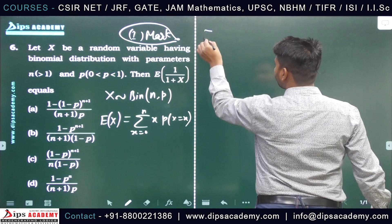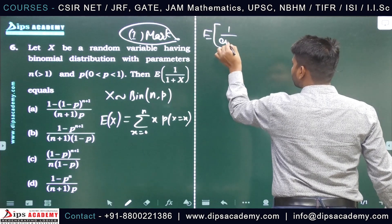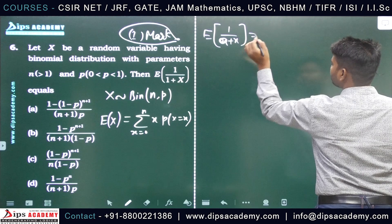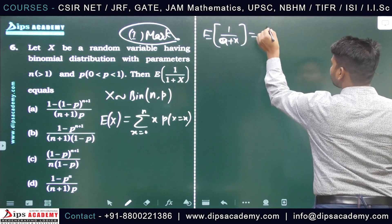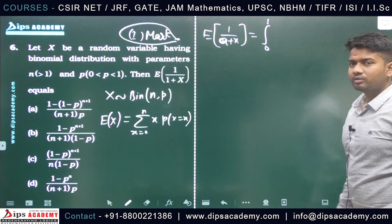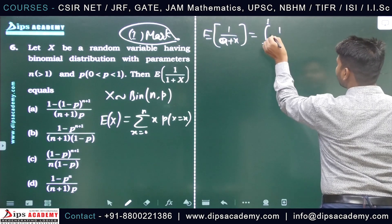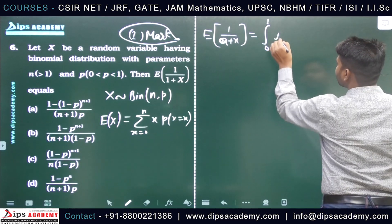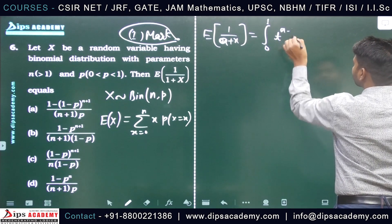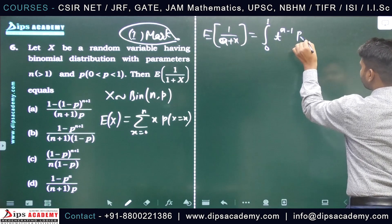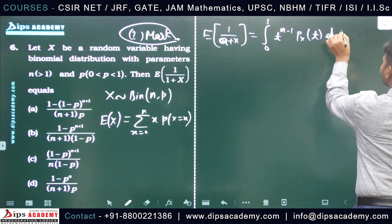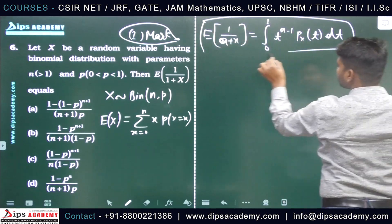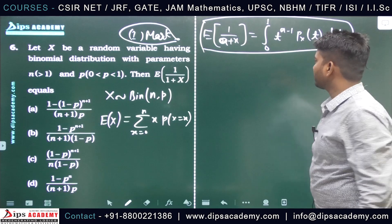The general formula we will use is: expectation of 1/(a+X) equals the integral from 0 to 1 of t^(a-1) times P_X(t) dt, where P_X(t) is the probability generating function. We will use this formula to solve question number six.